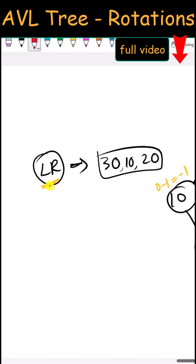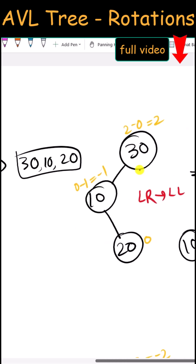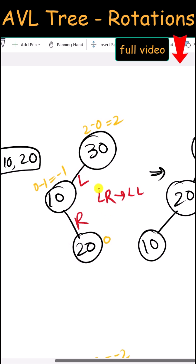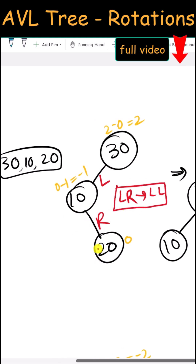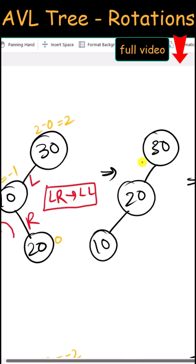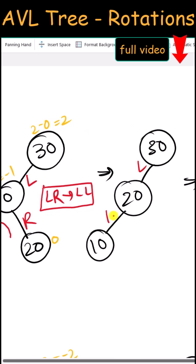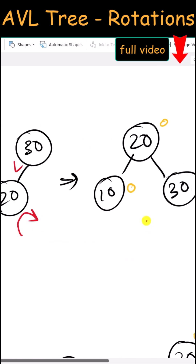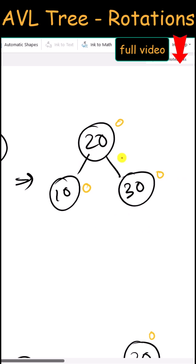Next we have the LR rotation. To balance this tree, first we have to convert from LR to LL — that means we have to rotate nodes 10 and 20 anti-clockwise. After that rotation we have converted from LR to LL. Now we have to rotate this clockwise, and finally you can see our tree is balanced.